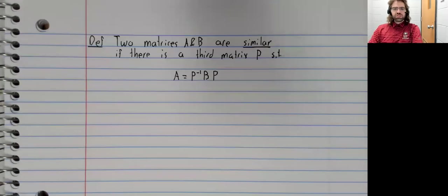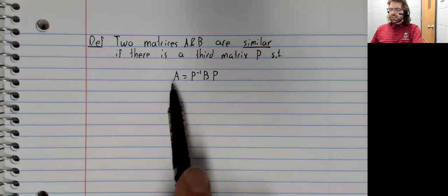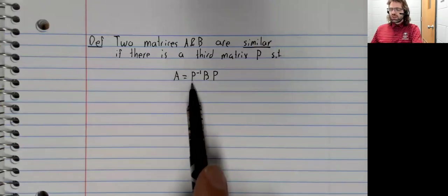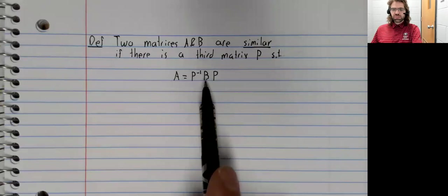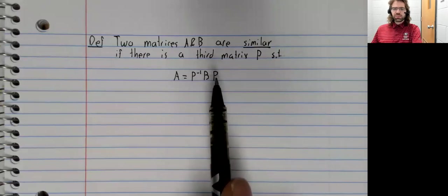Two matrices, square matrices A and B, are said to be similar if there is a third matrix P such that A equals P inverse times B times P.